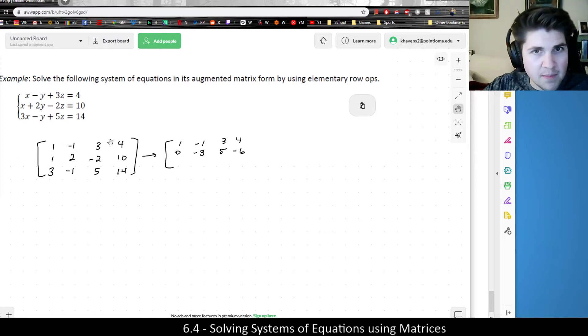And then I want to take three times the first row and subtract the third row. Or in the same way, take this times minus one and this times three and add them together. But you can add or subtract them if you prefer. But that would be negative three plus three is zero. Three minus one, because I'm going to take the first row times negative three and add, so that would be three minus one is two. Negative nine plus five is negative four. And negative 12 plus 14 is two.